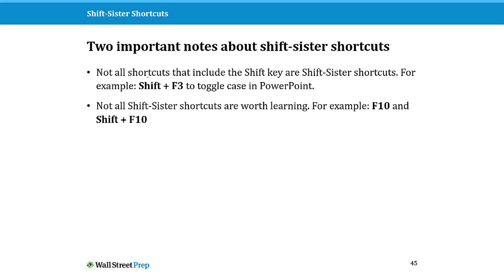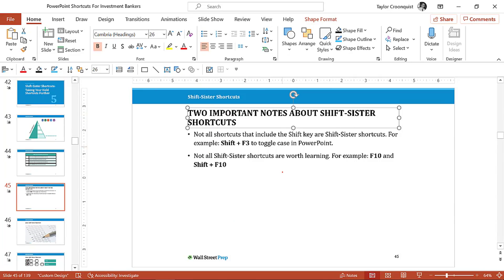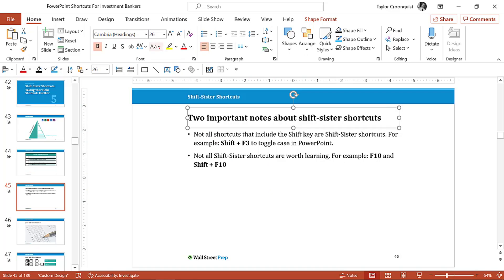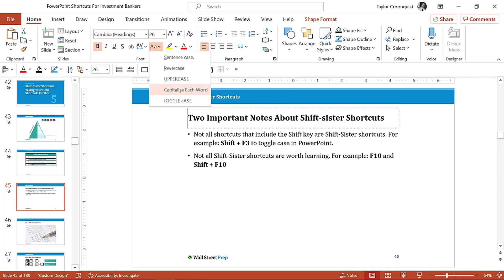First off, just because a shortcut has Shift in it does not mean it's a shift sister shortcut. For example, F3 in PowerPoint does nothing, but Shift+F3 is toggle case. If I select an object and hit Shift+F3, I'll get all caps; Shift+F3 again gives lowercase; Shift+F3 again gives sentence case. On the Home tab, you do have a Change Case dropdown, but capitalize each word is not part of Shift+F3.